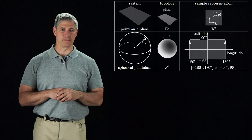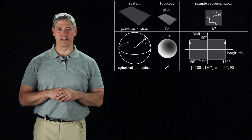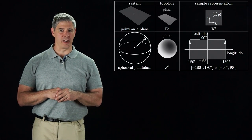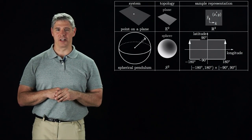A spherical pendulum pivots about the center of the sphere, and the topology of the C-space is the two-dimensional surface of a sphere. The configuration can be represented by latitude and longitude.